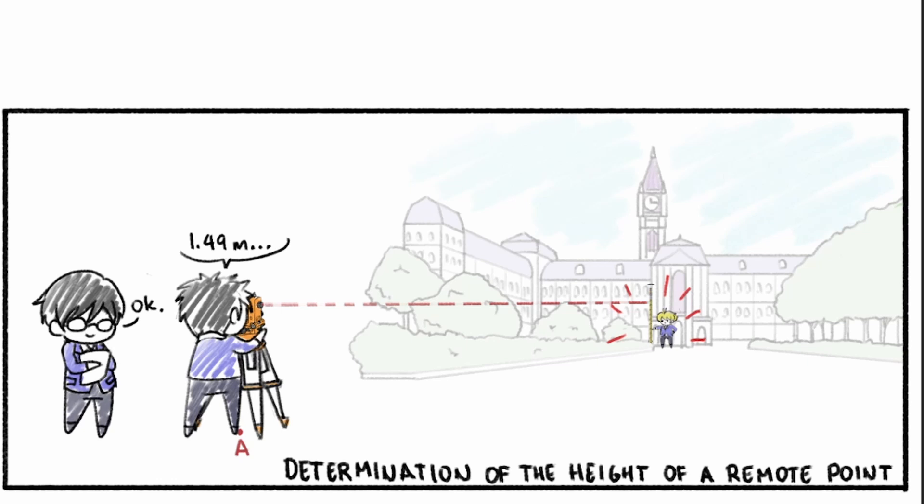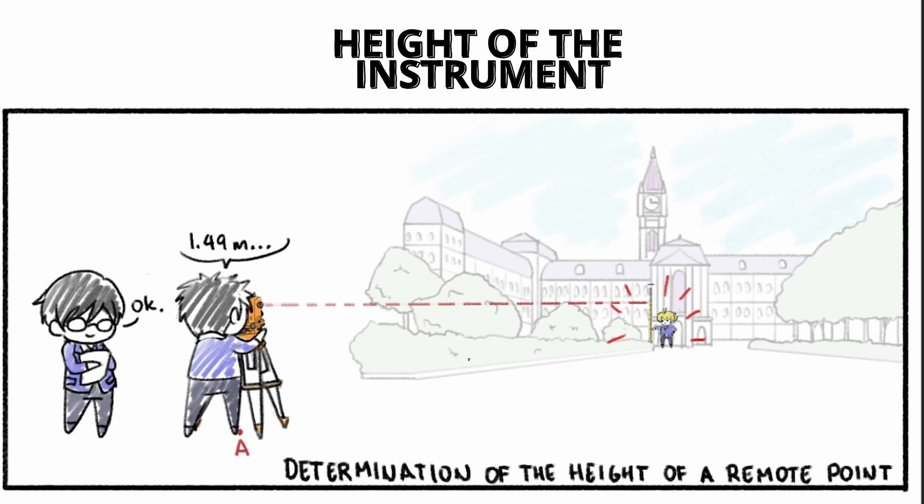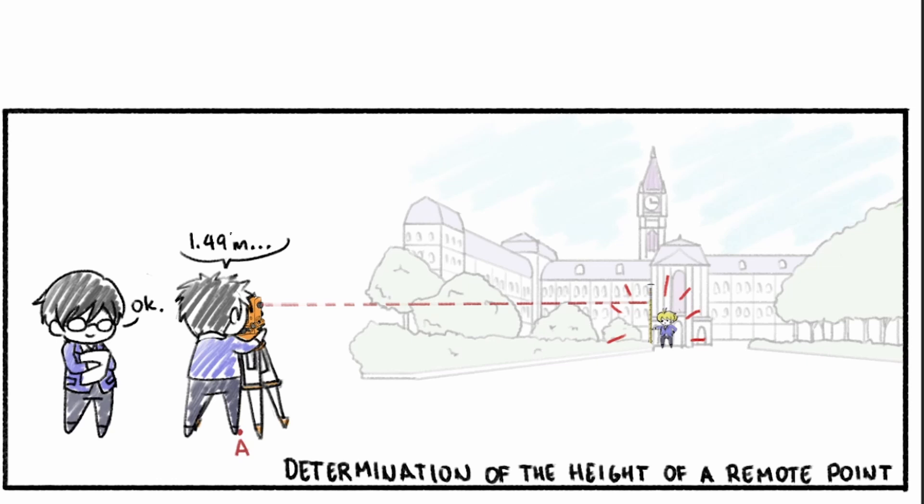Next, have the rodman stand in the line of sight of the theodolite and near the tower. Using the theodolite scope, get the reading on the leveling staff. This reading is the height of the instrument for the first trial. In our case, that value is 1.49 meters.